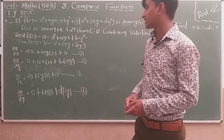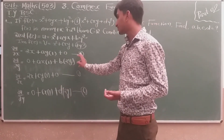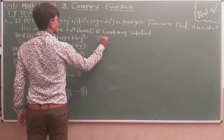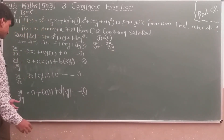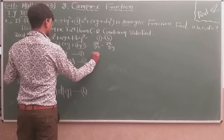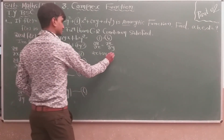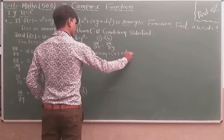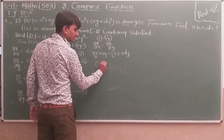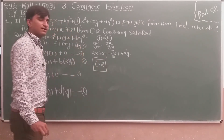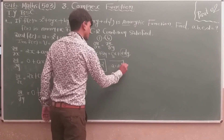Using the CR condition ∂u/∂x = ∂v/∂y, we equate equation 1 and equation 4: 2x + ay = cx + 2dy. Comparing both sides: the coefficient of x gives c = 2, and comparing the second terms gives the relation a = 2d.